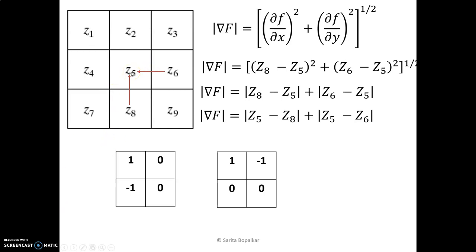This is the candidate pixel where we want to take a gradient. The magnitude of the gradient is the gradient in the x-direction squared plus the gradient in the y-direction squared, under root of that. This is the first derivative. In the x-direction, we are taking the first difference — the next pixel minus the present pixel, that is z8 minus z5. Similarly, in the y-direction, the next pixel minus the present pixel, z6 minus z5.